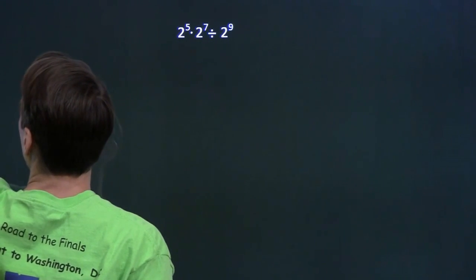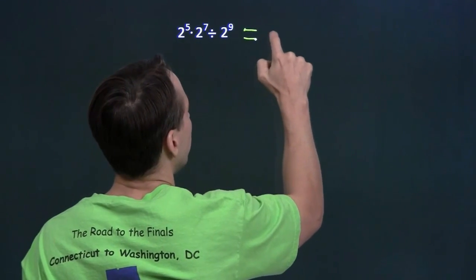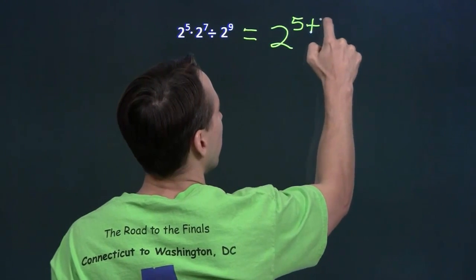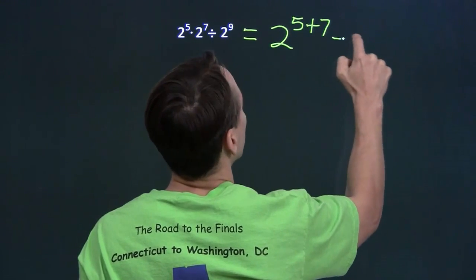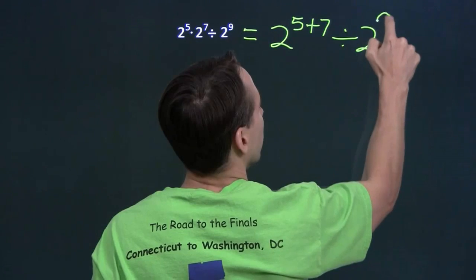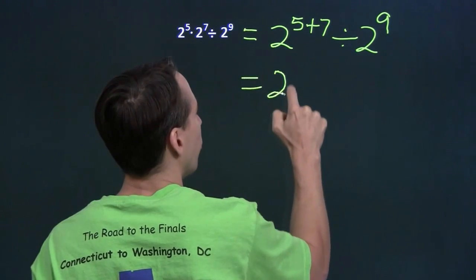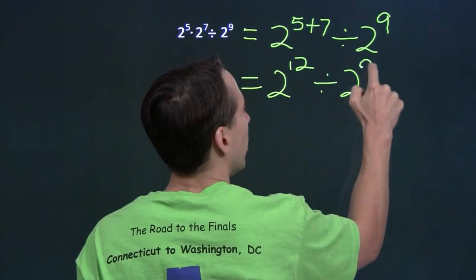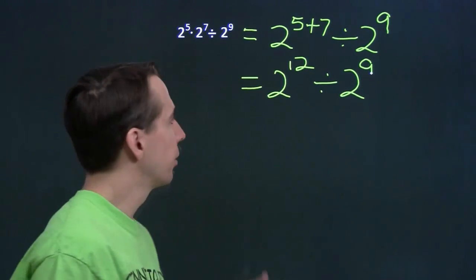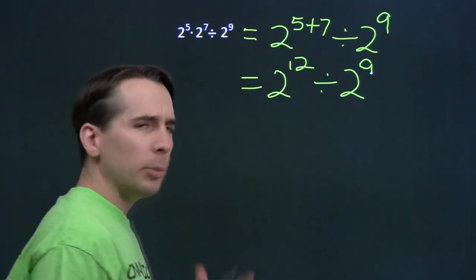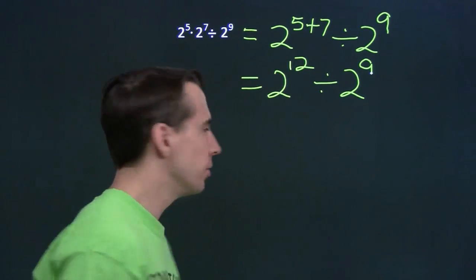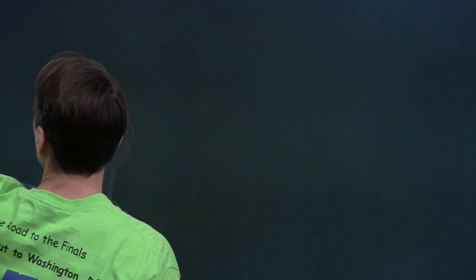So let's go back to our original problem. Using our new rule, this is two to the fifth plus seventh divided by two to the ninth. So that simplifies to two to the twelfth divided by two to the ninth. We're able to handle the product of two powers with the same base — now we have the quotient of two powers with the same base. Let's take a closer look at that.